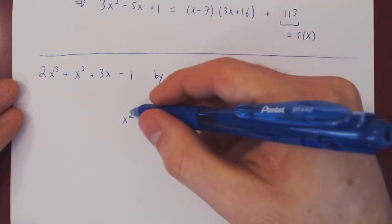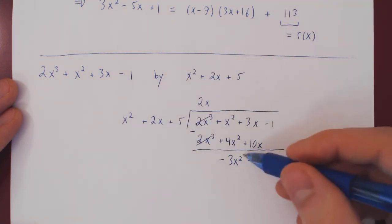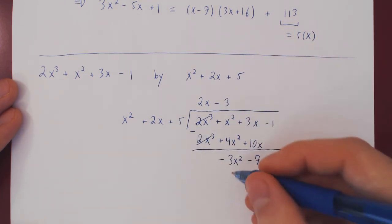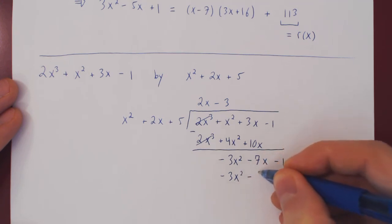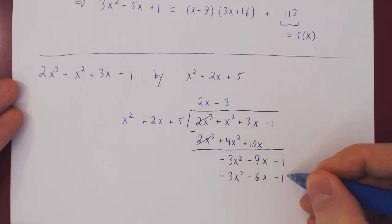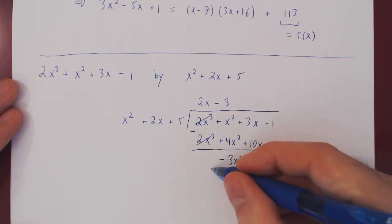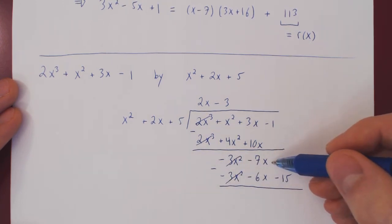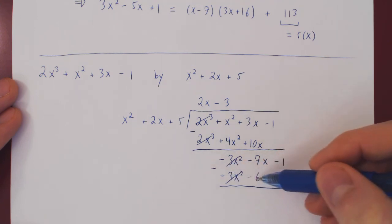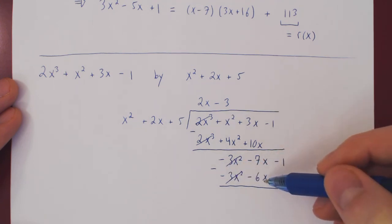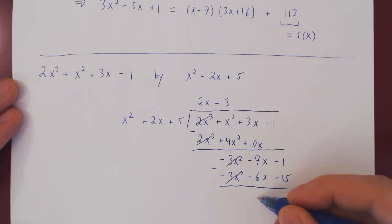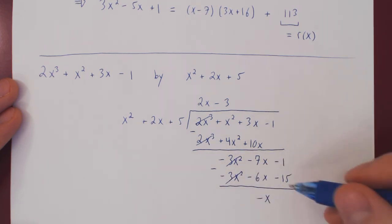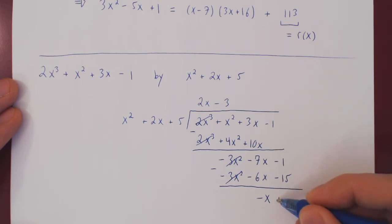What times x squared is negative 3x squared? Well, negative 3. We multiply out: negative 3x squared, negative 6x, negative 15. We subtract: these two cancel. Negative 7x minus negative 6x gives positive 6x minus 7x, which is negative x. And negative 1 minus negative 15 is positive 15 minus 1, which is positive 14.